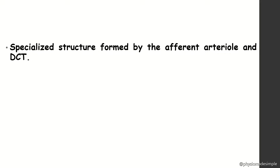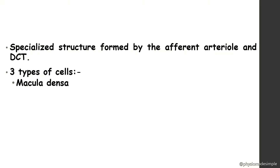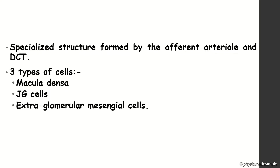The juxtaglomerular apparatus contains three types of cells: macular densa cells, juxtaglomerular cells, and extraglomerular mesangial cells.